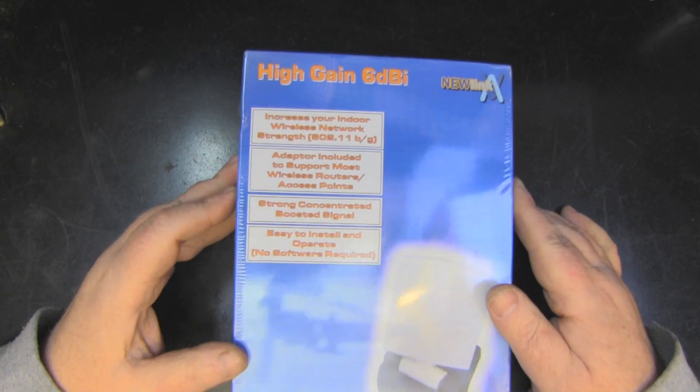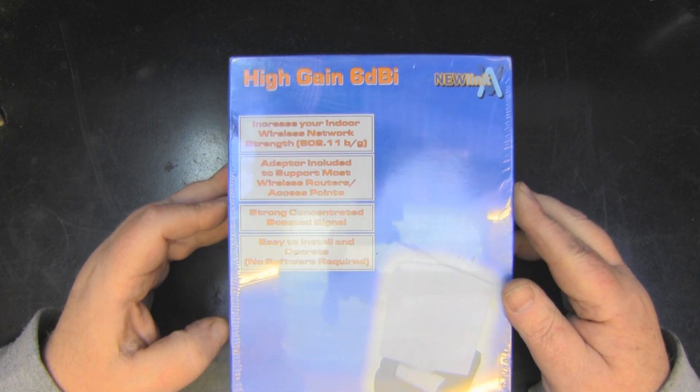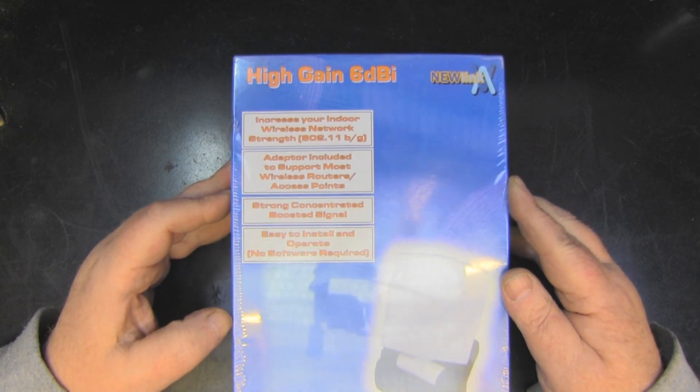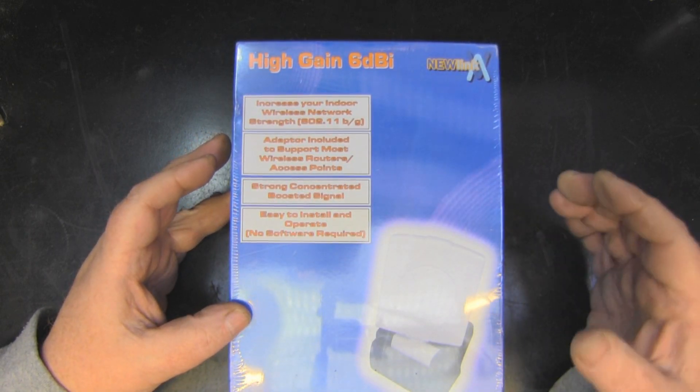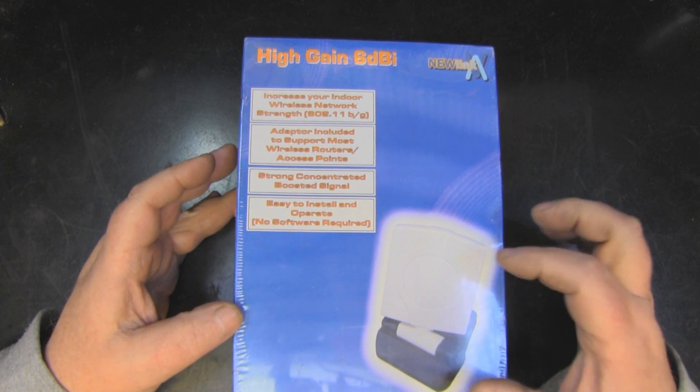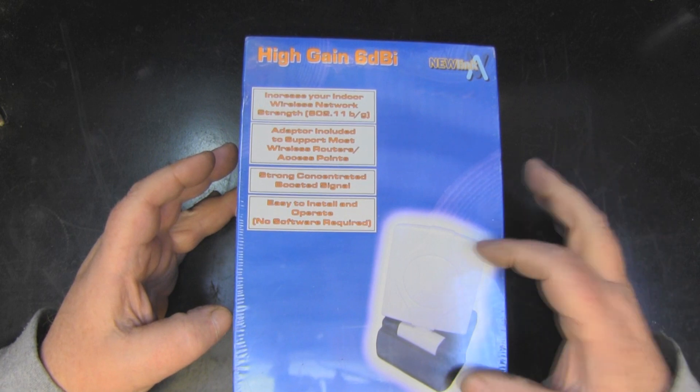Now I've got a cheap little eBay purchase here for us to take a look at. It's a high gain 6 dBi antenna for 2.4 gigahertz. I will say I did purchase this because I was interested in the form factor of the case. I like how this apparently folds up nice and flat, and I did purchase it to hopefully stick something else inside.